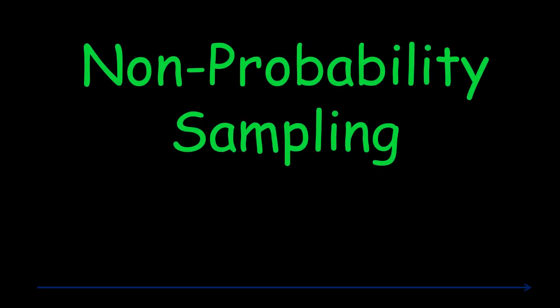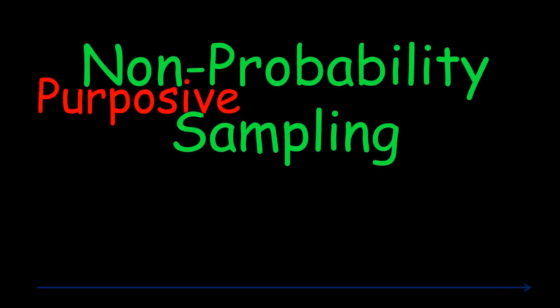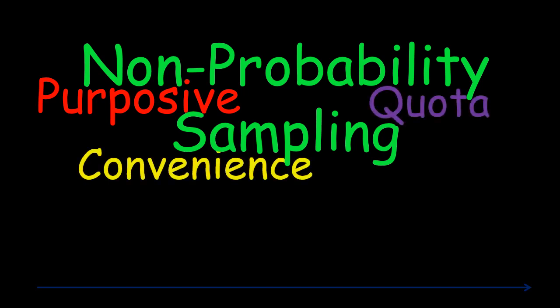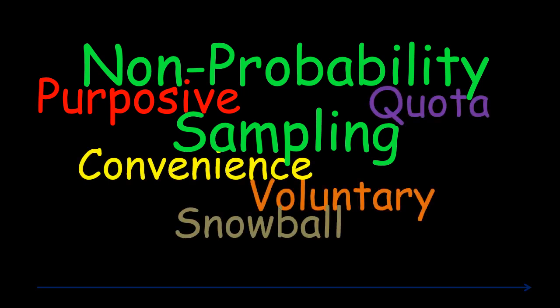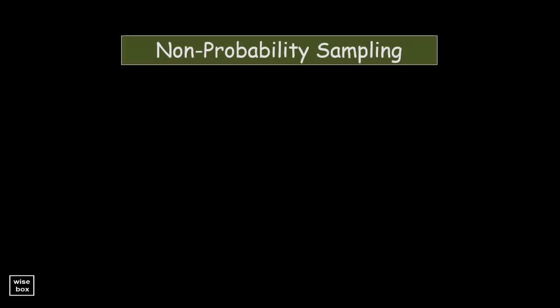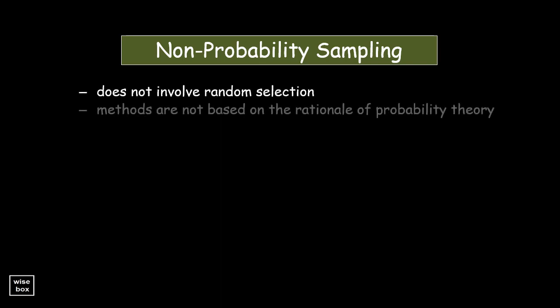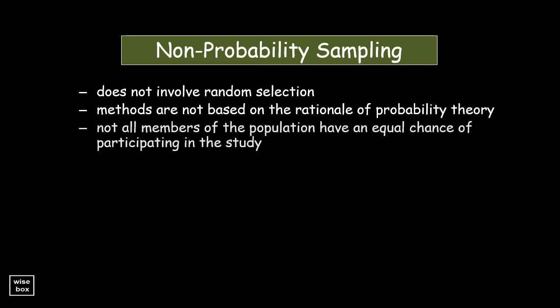Non-probability sampling methods. This type of sampling does not involve random selection, and methods are not based on the rationale of probability theory. It is a sampling method in which not all members of the population have an equal chance of participating in the study.